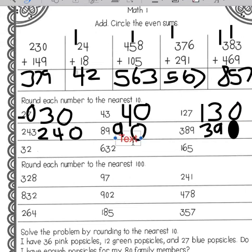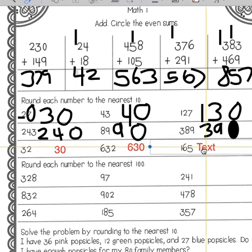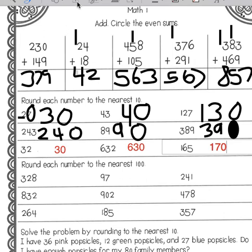I'm going to try using a text box for this one to make it a little easier. Thirty-two: we have a three in the tens place, a two to the right of the rounding place, so this number will stay the same and the two will become a zero. Six hundred thirty-two: the three stays the same, so it'll be six hundred and thirty. One hundred sixty-five: we have a six in the tens place, a five to the right — since five or greater rounds up, this will be one hundred and seventy.